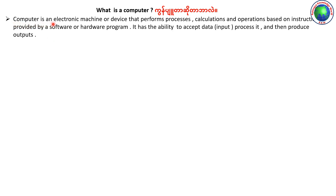A computer is an electronic machine or device that performs processes, calculations, and operations based on instructions provided by a software or hardware program. It has the ability to accept data as input, process it, and then produce outputs.